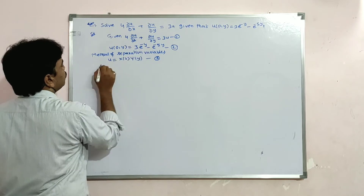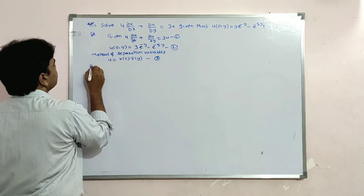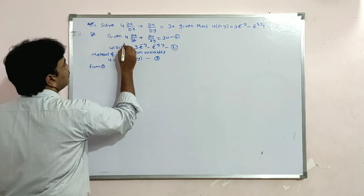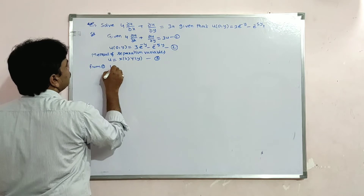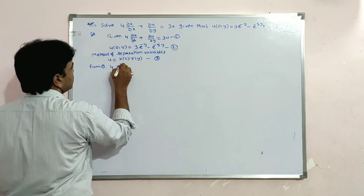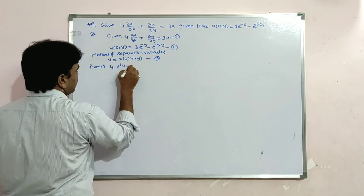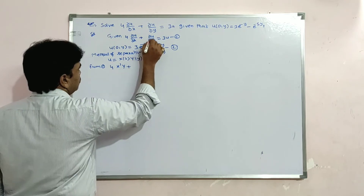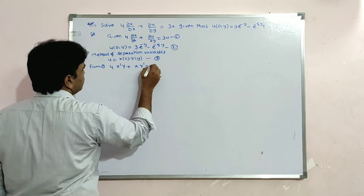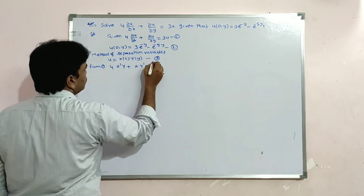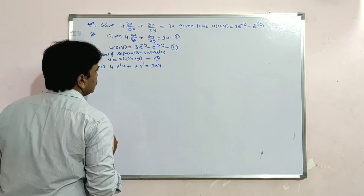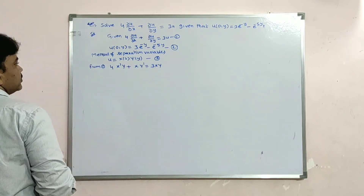Substituting into equation 1: 4·(X'·Y) + (X·Y') = 3·X·Y. Here ∂u/∂x = X'·Y and ∂u/∂y = X·Y'.